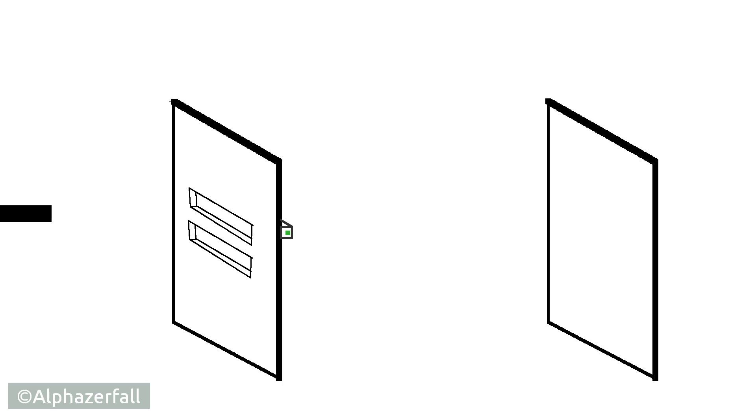Does the electron travel through both gaps at the same time and interfere with itself like a wave? To find out we mount a detector at one gap who records and beeps if an electron passes the gap he's mounted on.